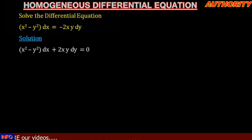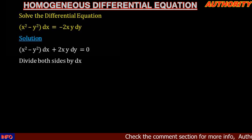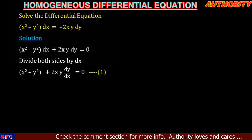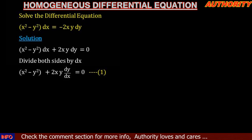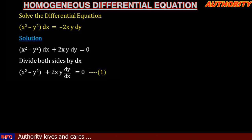Let's divide both sides by dx. We have x squared minus y squared dx plus 2xy dy equal to zero. When we divide both sides by dx, we are going to have x squared minus y squared plus 2xy dy/dx equal to zero. Let's call this equation 1.